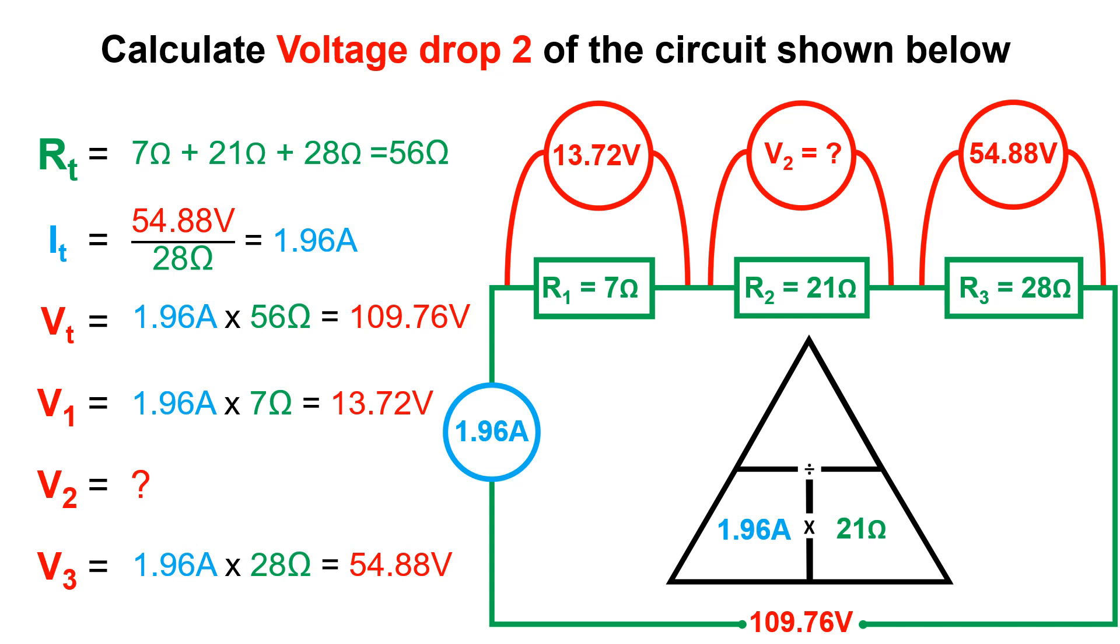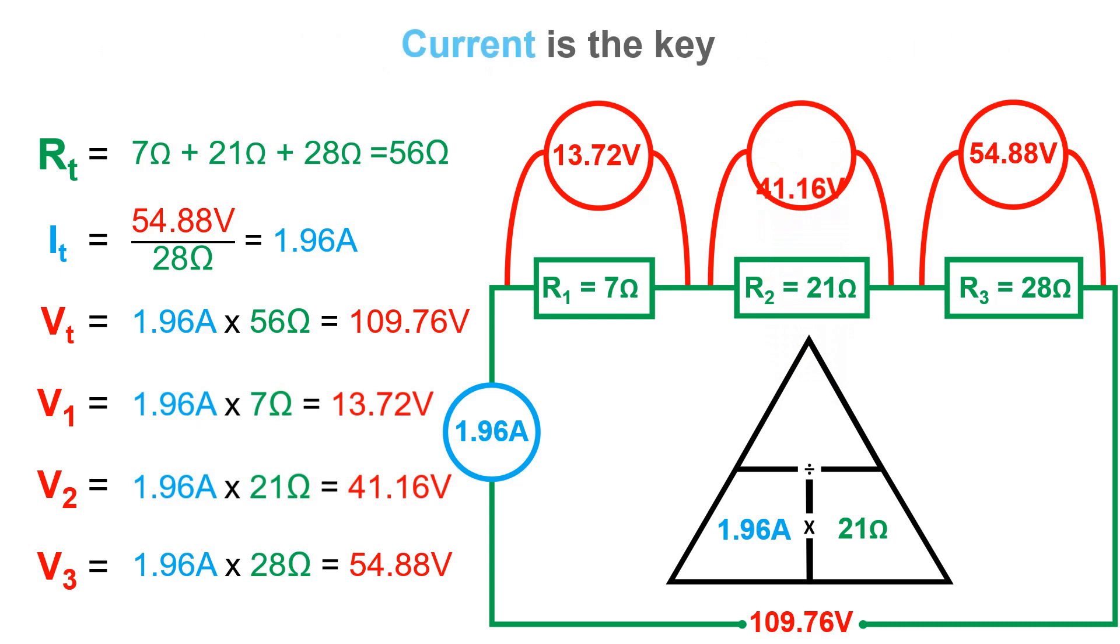As the current total within the series circuit stays the same we can use it with the other resistor values to calculate the voltage drop across the last resistor, which gives us a voltage drop of 41.16 volts. As you can see the current total is the key to unlocking all the voltage drops across each resistor.